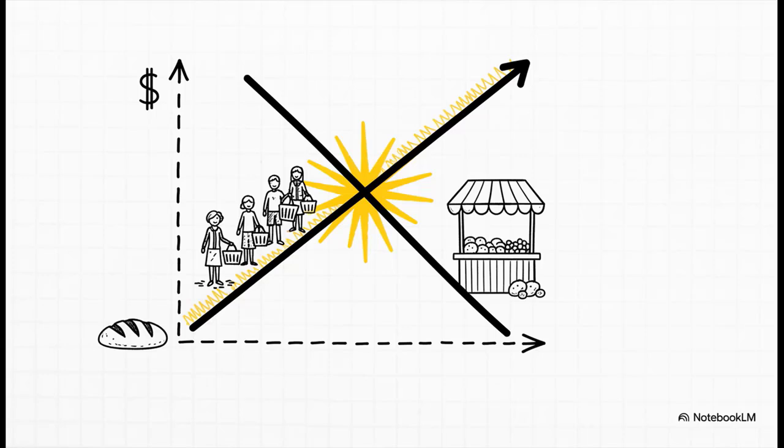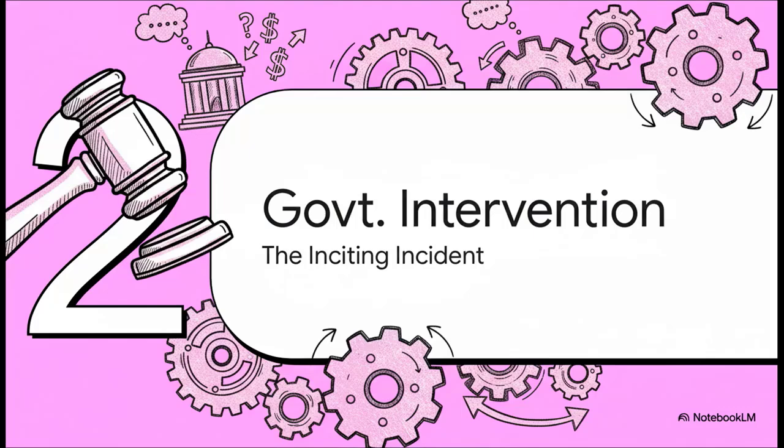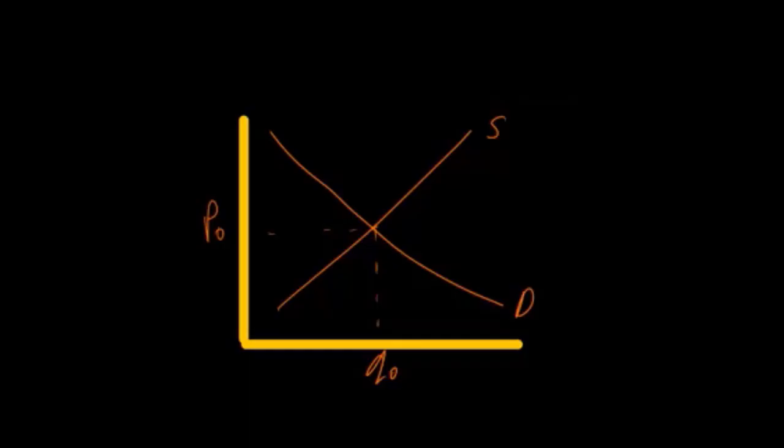But now, into this perfectly balanced little world, a new player enters the game. The government decides it wants to shake things up. And the tool they use is called a subsidy. Now, here's the really crucial part. This isn't just a big check they hand over. It is a specific payment that a producer gets for every single item they sell. And the motivation is usually pretty solid. They're looking at things we all need, like bread or milk, and they're trying to bring that price tag down to make those necessities just a little bit more affordable for everybody.